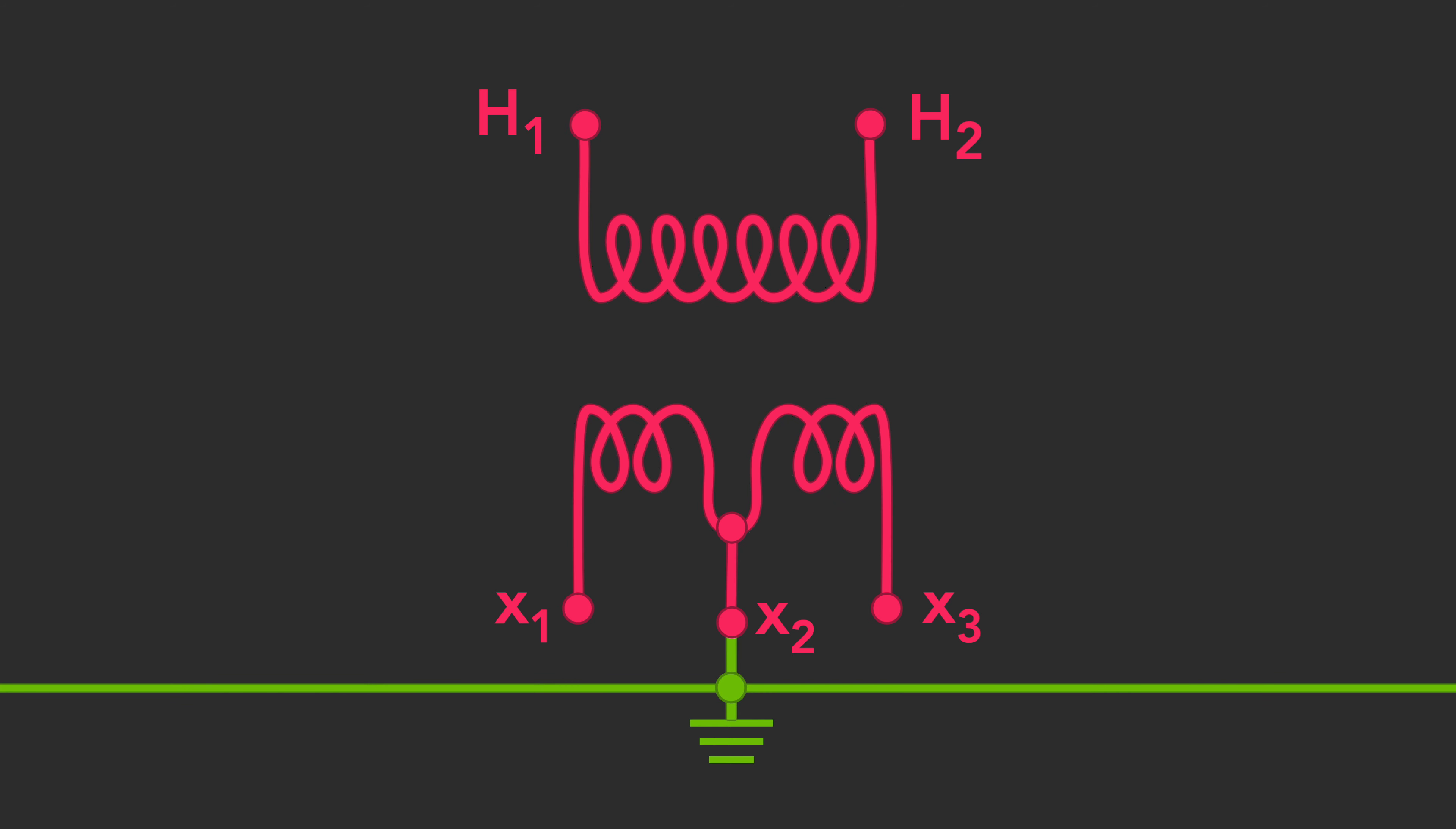Each winding connection, X1 to X2 and X3 to X2, provides 120 volts. A connection between X1 and X3 will yield 240 volts.